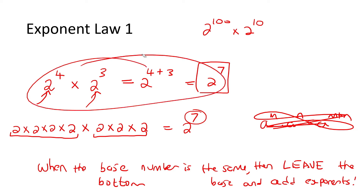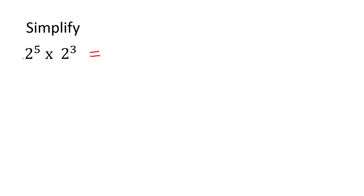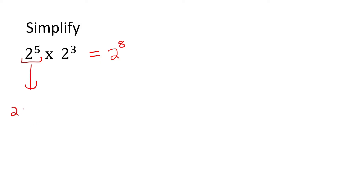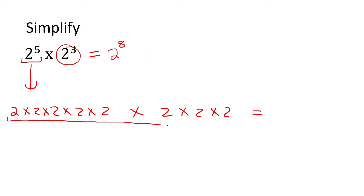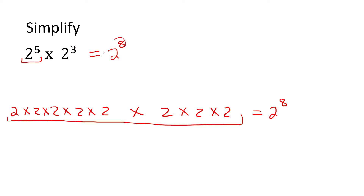Now let's move on. When the bases are the same, leave the base — what do we do with the exponents? Add them. So what's that answer? 2 to the power of 8. If you are still feeling a bit unsure, you can expand it as 2 times 2 times 2 times 2 times 2, and then times 2 times 2 times 2, and just put a times in between them. Eventually I want you to upgrade to doing it the quick way. How many 2s do we now have? 8. You see, it's the same thing, but this is just so much faster.